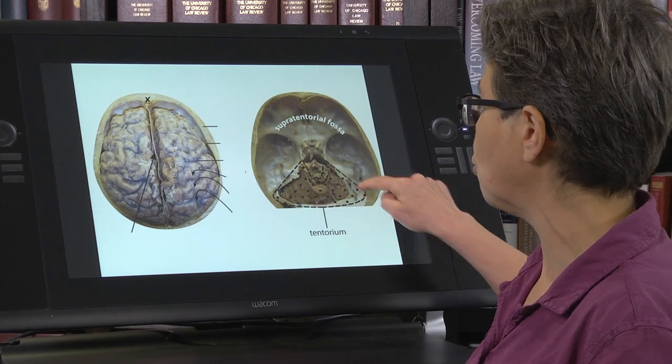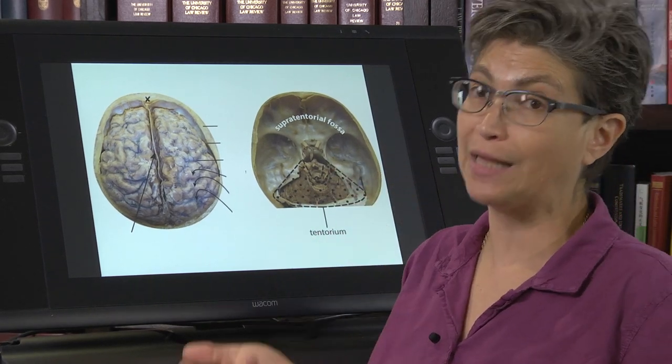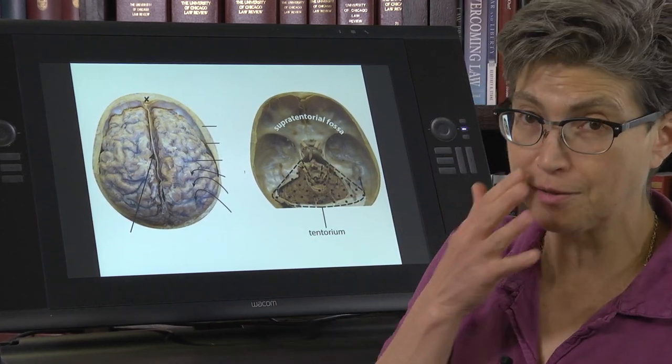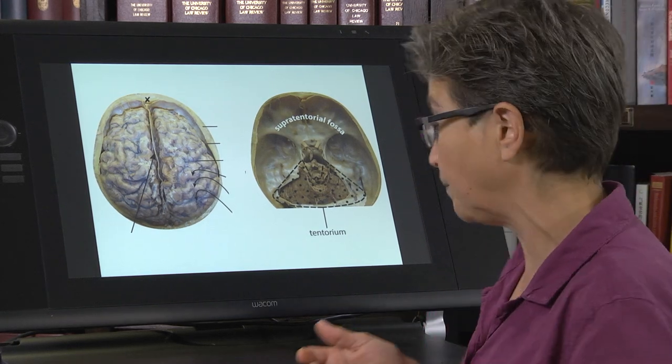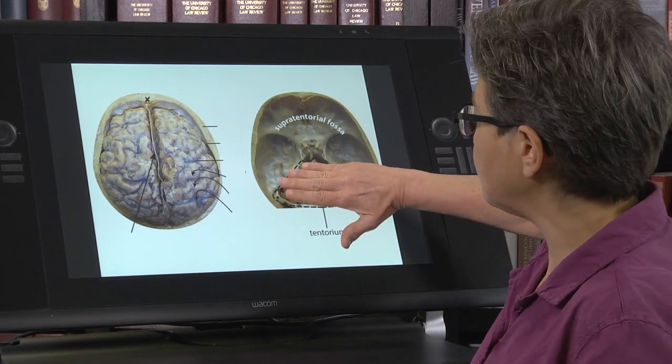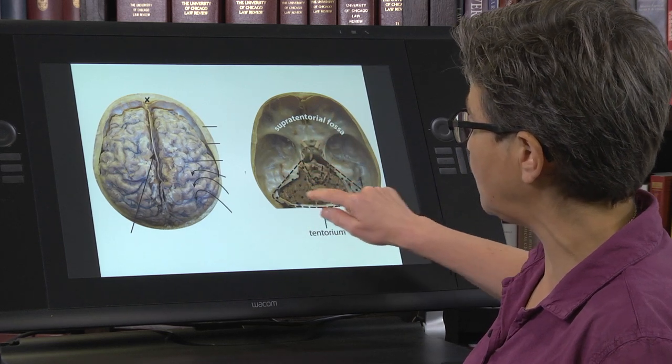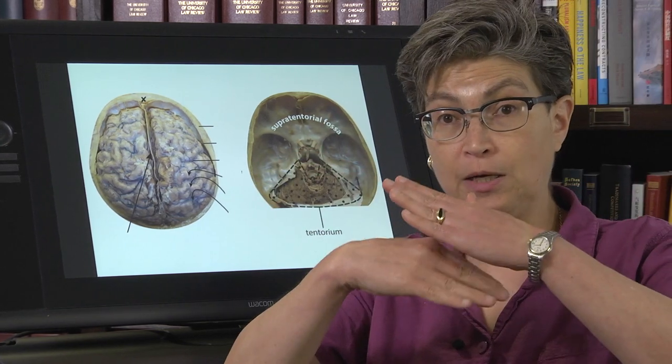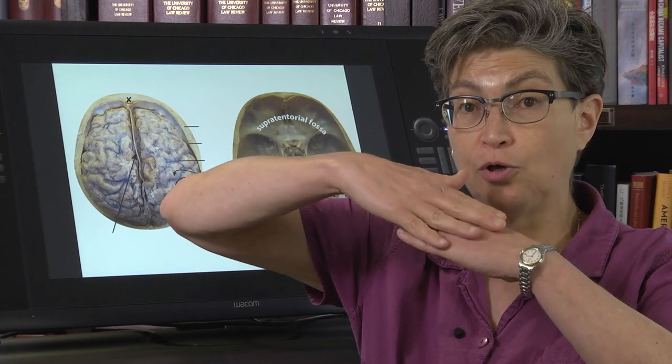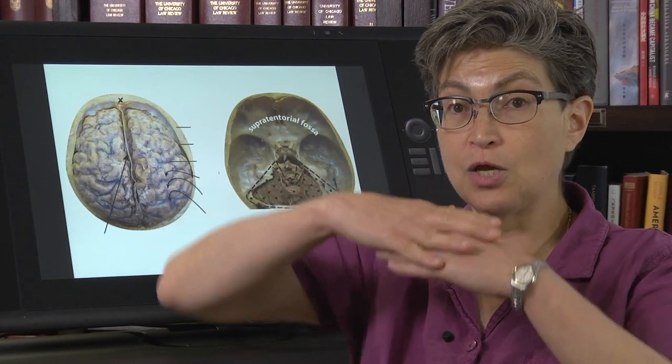The second one is called the tentorium or the tentorium cerebelli—I think it's always referred to as the tentorium. This tentorium is a fold of dura between the cerebellum underneath and the occipital lobe above.